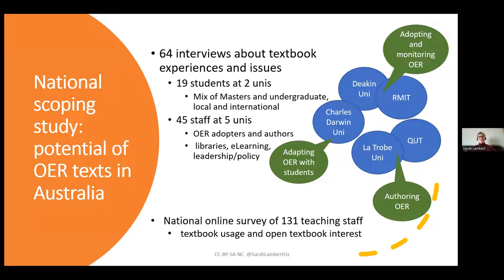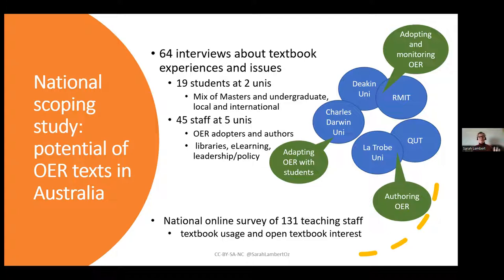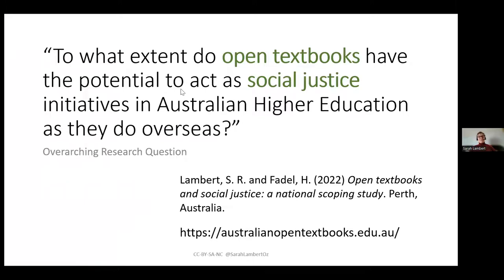The national scoping study of the potential of OER textbooks in Australia covered five universities, talking to students at two and staff at five. We had a mix of masters and undergraduate, local and international students. Across the universities we selected for differences in practices — those monitoring and adopting, those already investing in authoring, and those adapting OER with students as a new emerging practice. There was also a national online survey of teaching staff about textbook usage and open textbook interest.